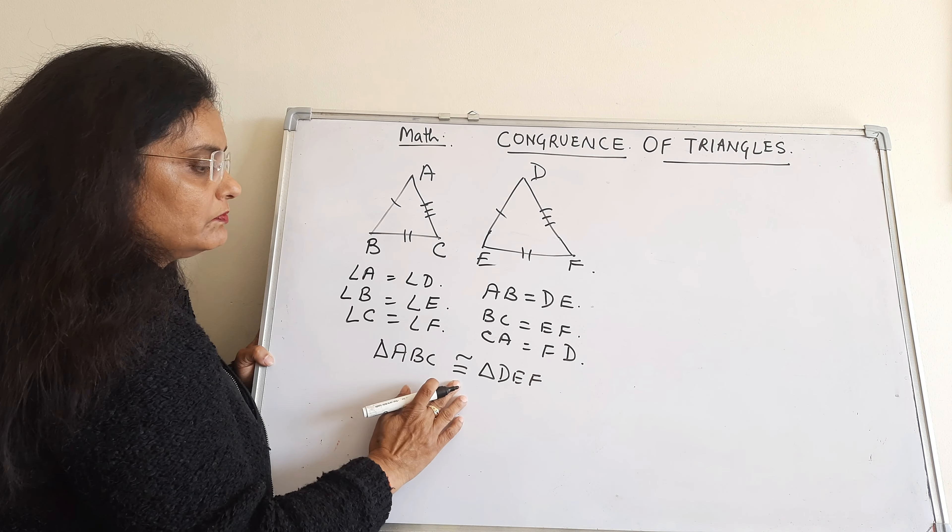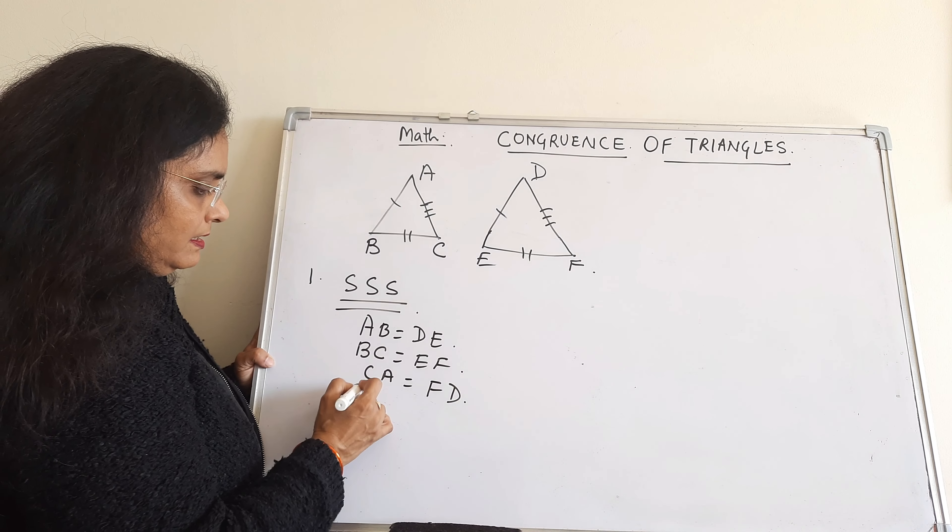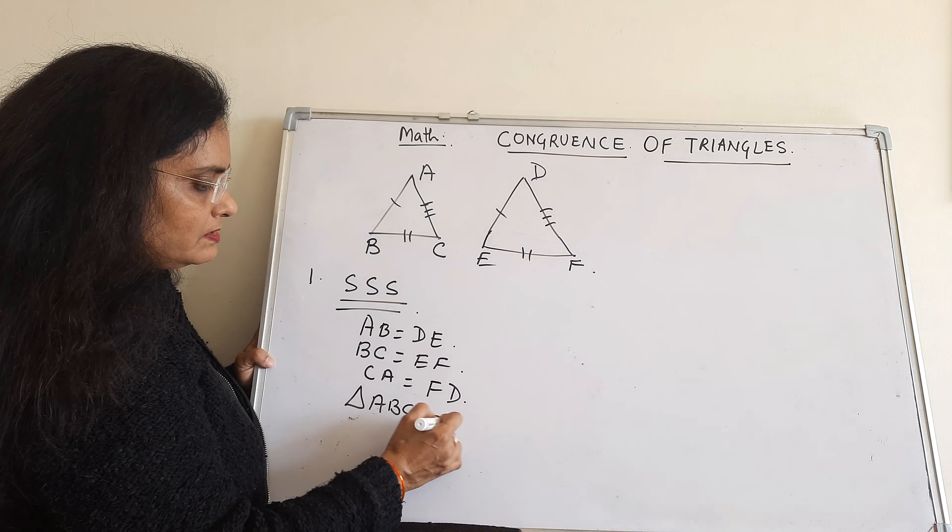Now let us study the types of congruence. There are five types. The first is the Side-Side-Side congruence rule. If the three sides of one triangle are equal to the three sides of the other triangle, then the two triangles are congruent. Here side AB equals DE, side BC equals EF, and side CA equals FD, so triangle ABC is congruent with triangle DEF.